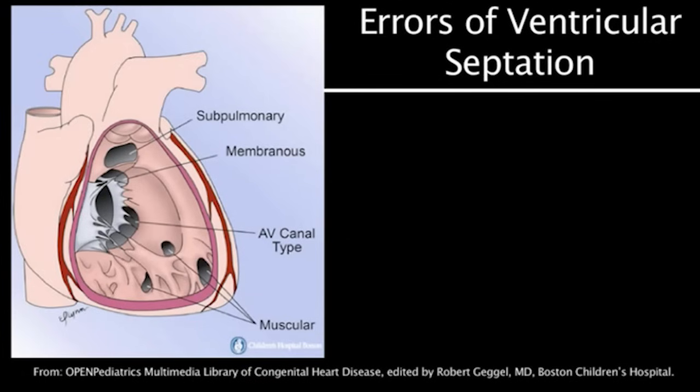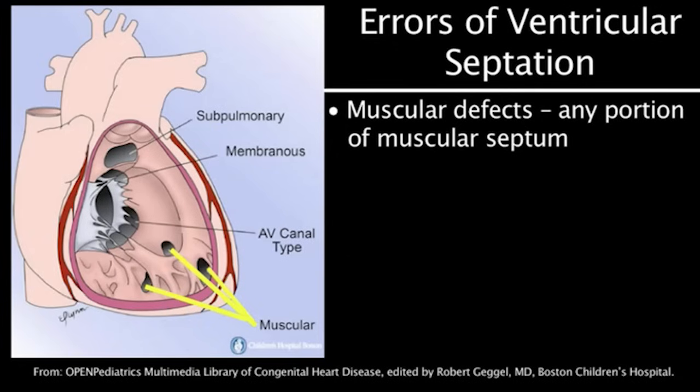Errors may occur during ventricular septation. Muscular defects can occur in any portion of the muscular septum. Small defects often close on their own as the tissues develop.